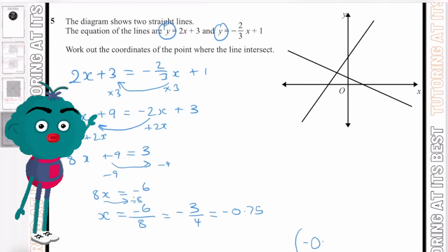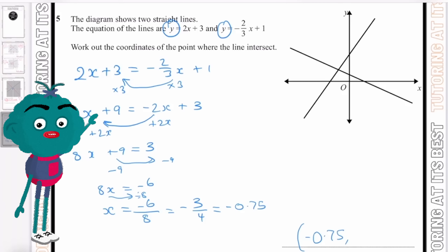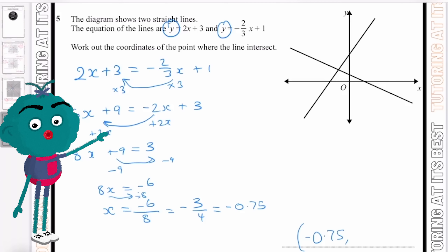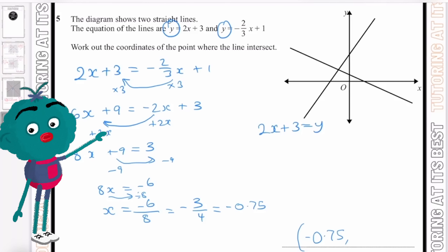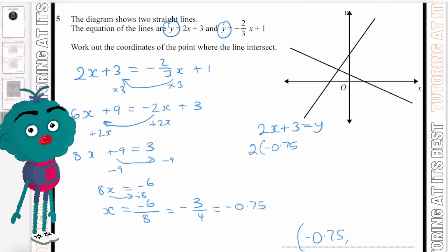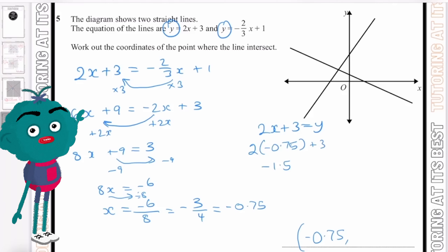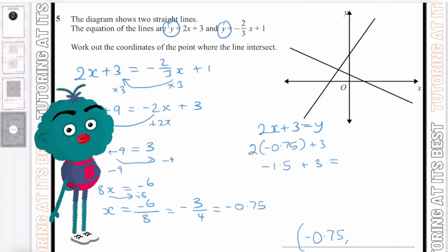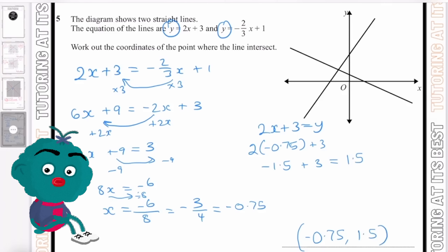So x equals minus 0.75. Now substituting into y equals 2x plus 3: 2 times minus 0.75 gives minus 1.5, and adding 3 gives positive 1.5. So y equals 1.5. The coordinates of the intersection point are (minus 0.75, 1.5).